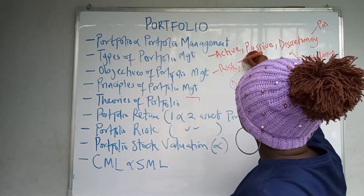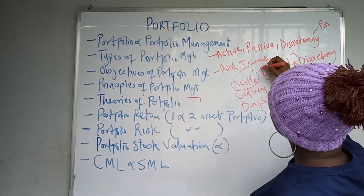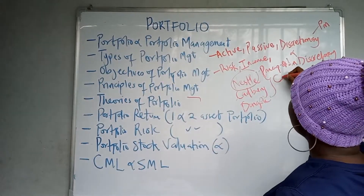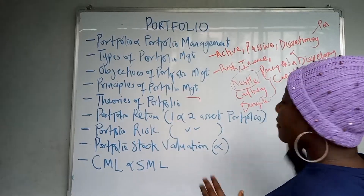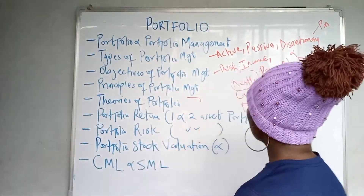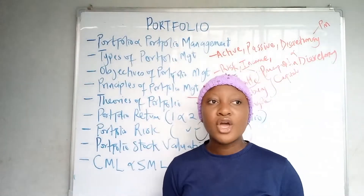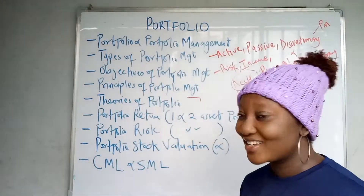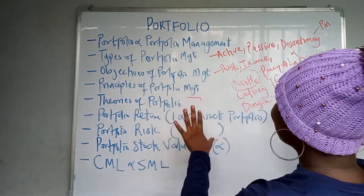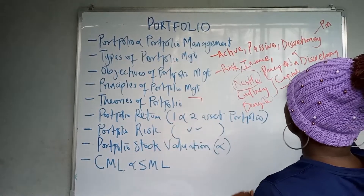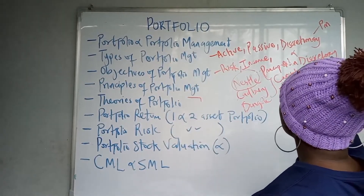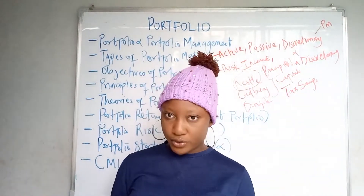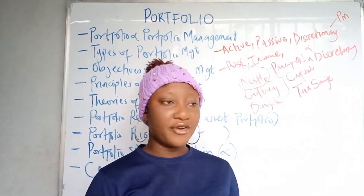Further objectives of portfolio management include stabilizing your income, maintaining your principal, and capital appreciation — meaning you want your capital to grow, share prices to increase, and reinvested income to deliver returns. Another objective is tax savings, since there are tax laws and opportunities that favor investors, and good portfolio management allows you to claim those savings.